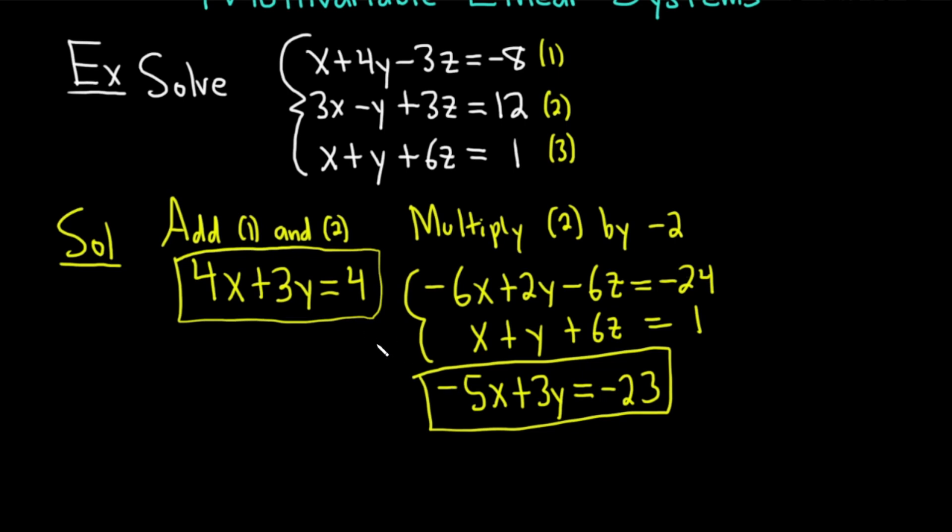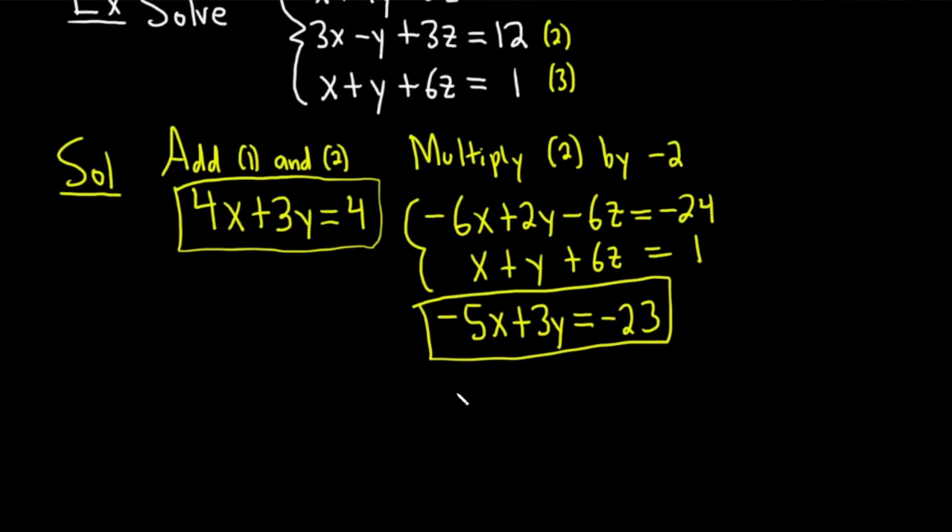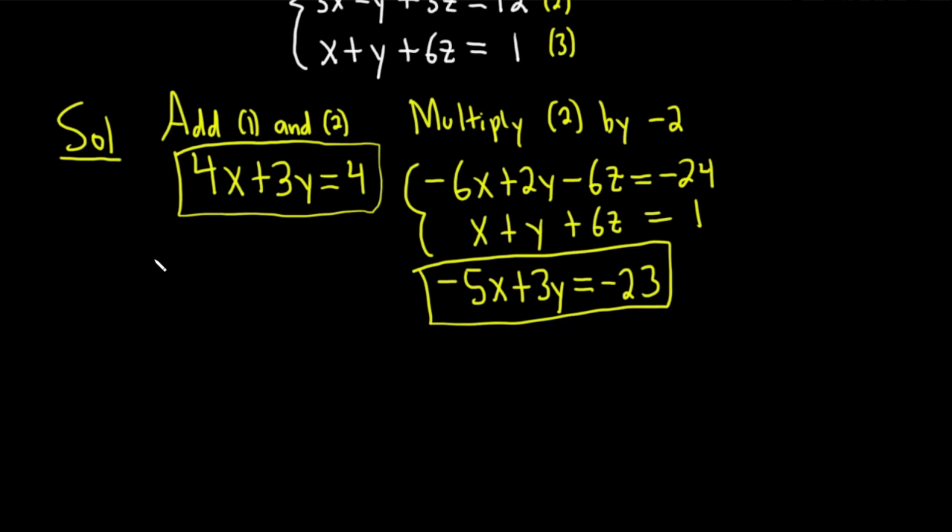Now we're going to solve these equations that are in boxes, so it takes a bit of work. I'm going to write them both: we have 4x plus 3y equals 4 and negative 5x plus 3y equals negative 23. This strategy will usually work. You pick two equations, get rid of a variable, pick another two equations, get rid of the same variable, and then you end up with something like this. This is the worst case scenario. Sometimes the problems are easier.